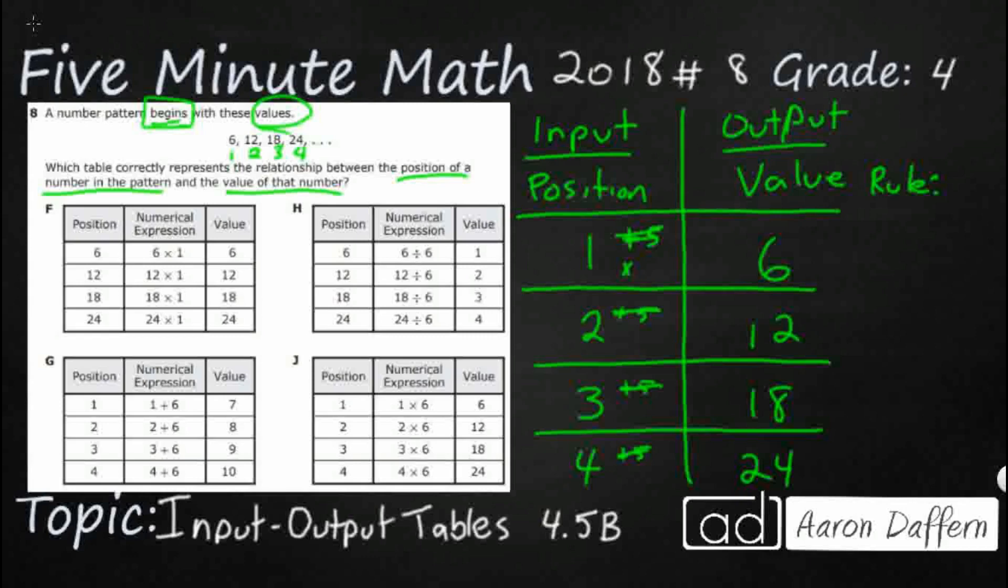Let's try a multiply. 1 times what makes 6? Well, 6, I did say it looks like they were skip counting by 6s. So 1 times 6 makes 6. Does 2 times 6 make 12? Yes.